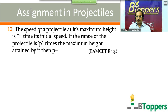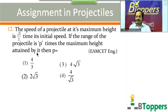Question number 12: the speed of a projectile at its maximum height is √3/2 times its initial speed. The range of the projectile is p times the maximum height attained by it. Then p equals — come on, try the question. This question was also given in one of the previous engineering entrance examinations.